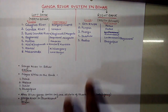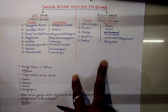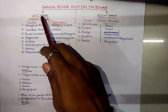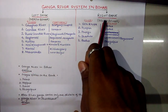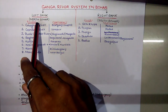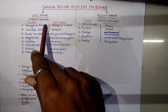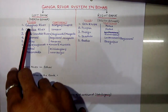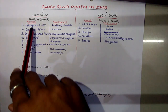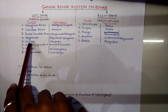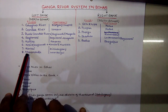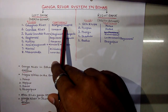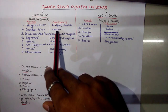In Jharkhand, the Ganga covers only 40 km. Here you can see some facts about the Ganga river system in Bihar. The left bank rivers are in North Bihar and the right bank rivers are in South Bihar. There are eight main left bank rivers: Ghagra, Gandak, Budhi Gandak, Bagmati, Kharcha, Kosi, Kankai, and Mahananda.